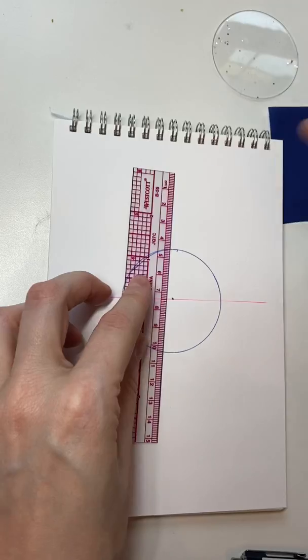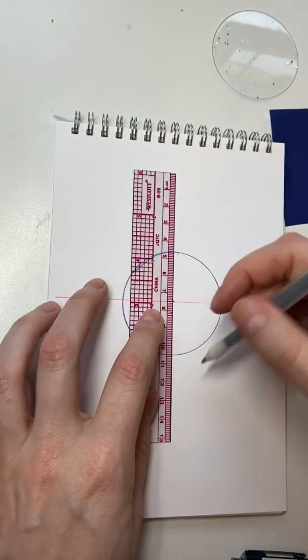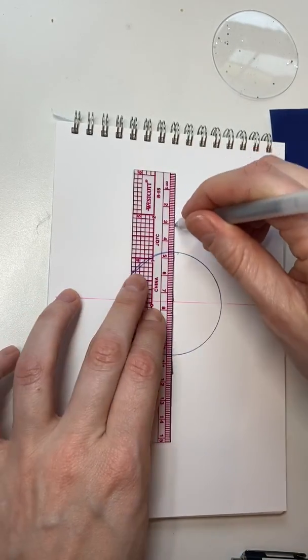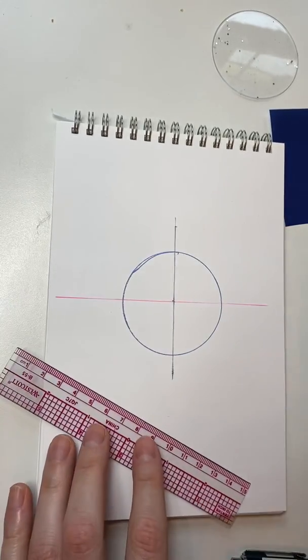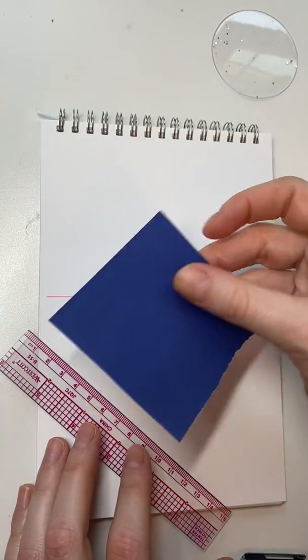And then we're going to draw a roughly perpendicular line here. Perpendicular line. We need to split this evenly though here. And here's my fabulous trick for this.